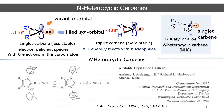The first stable NHC carbene was reported by the group of Arduengo, where they used an imidazolium salt of an adamantyl derivative. They first deprotonated it with sodium hydride base, which leads to the stable NHC. As this goes through an ionic mechanism via deprotonation, it generates a singlet carbene — that is also a key property of NHCs. Generating a carbene through an ionic mechanism generally gives a singlet carbene.